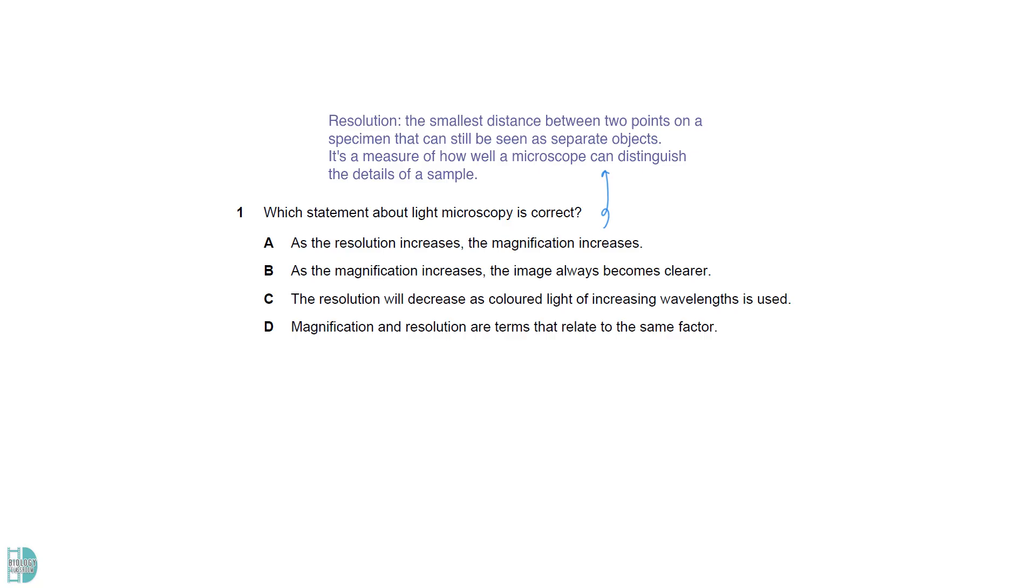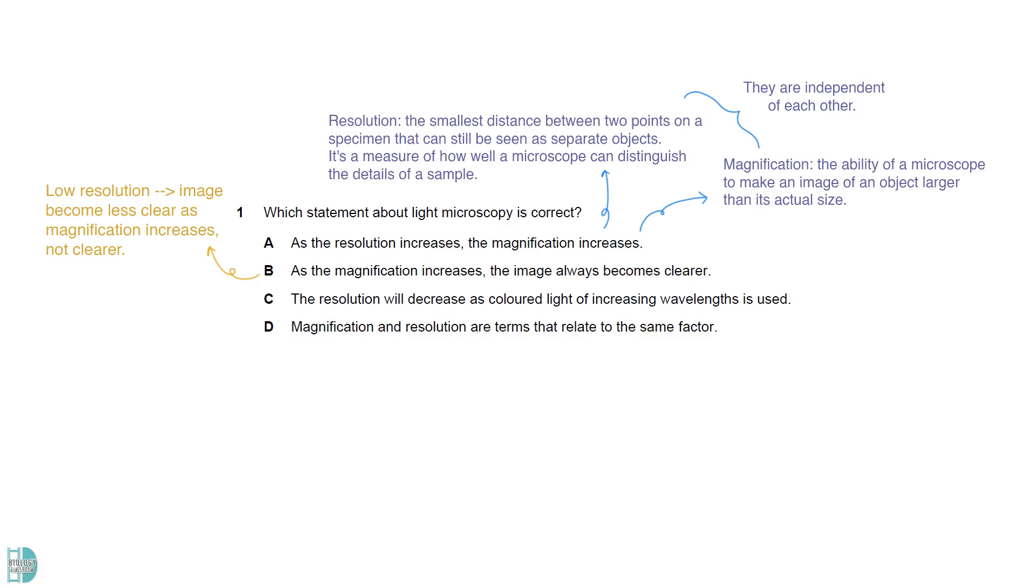Resolution is the smallest distance between two points on a specimen that can still be seen as separate objects. It is a measure of how well a microscope can distinguish the details of a sample. Magnification is the ability of a microscope to make an image of an object larger than its actual size. They are two different aspects of a microscope and are independent. If the microscope has a low resolution, the image will likely become less clear as magnification increases. It can't be clearer.